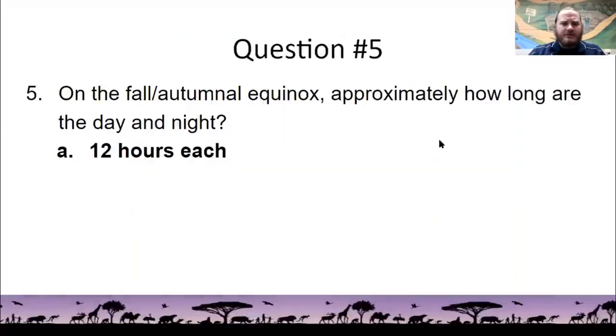All right, round three, three points each. On the fall or autumnal equinox, the day and the night are about 12 hours long each. And if you look at the word equinox, you can see in the first half of that word equa, equal, and then nox, night, equal night, which means equal day. 12 hours each, over 24 hours.